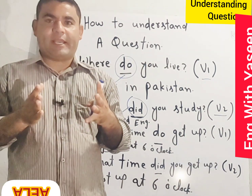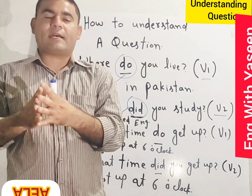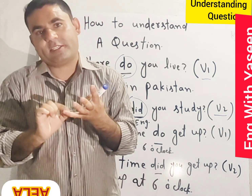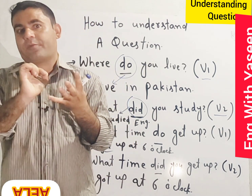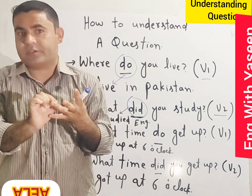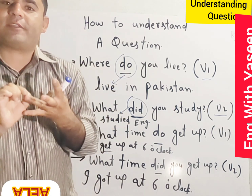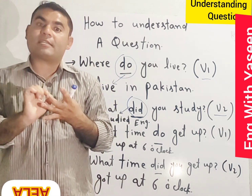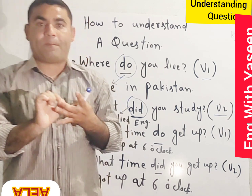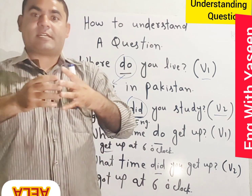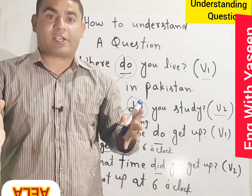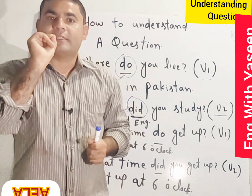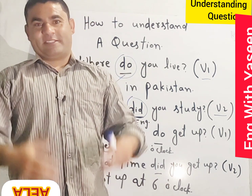To summarize: when someone asks a question with 'do,' the person is asking about your routine actions, so you answer with the first form of the verb. But if someone asks a question with 'did,' the person is asking about your currently completed actions, and you answer with the second form of the verb. That's what we had here today.